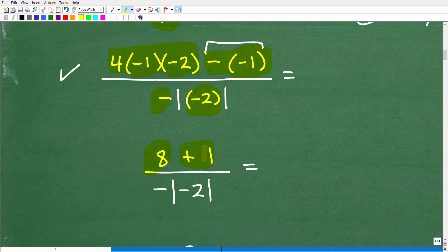So, I have 8 plus 1. Of course, that's 9. But we'll get to that in a second. And then down here in the denominator, there's nothing to do inside these parentheses. It's just a negative 2. So, I'm going to have to figure out what the absolute value of negative 2 is and then find the opposite of it.